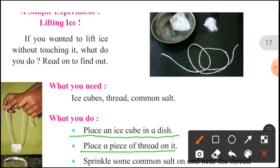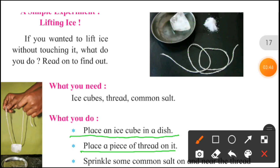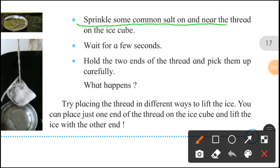Place a piece of thread on it — barf ke upar ek dhaga rakhna hai, either at the corner or in the middle. Then sprinkle some common salt on and near the thread on the ice cube — jahan par dhaga aur barf touch hota hai vahan khane ka namak spread karna hai.